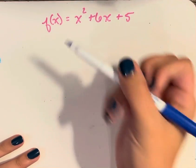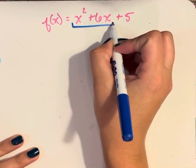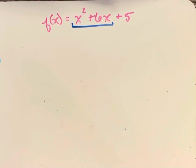I'm going to take these two terms, x squared plus 6x.